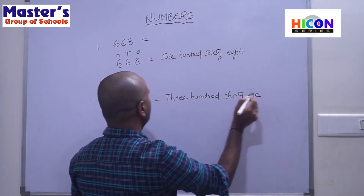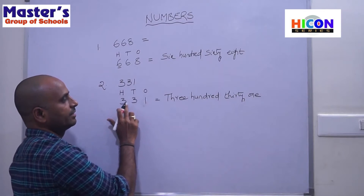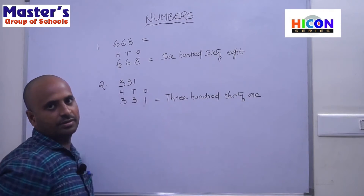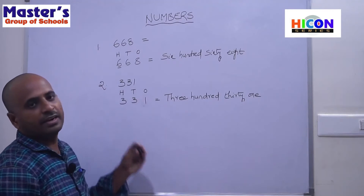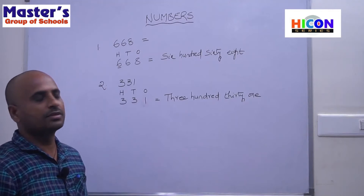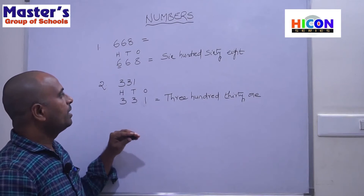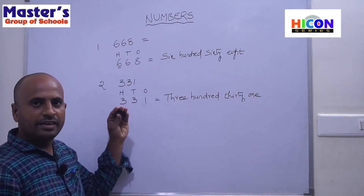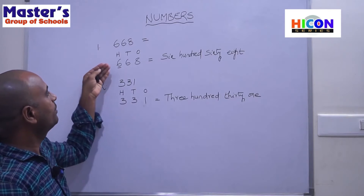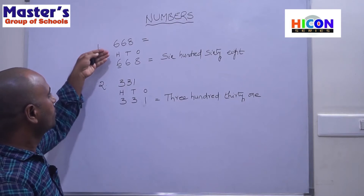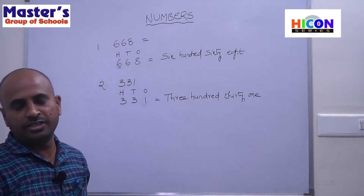The next three is in tens place, so it can be written as thirty. And one is in ones place, so it becomes one. So the number name for 331 is three hundred thirty one. This is how you write number names for three-digit numbers, which you have already learned in second class.